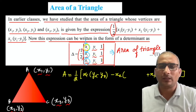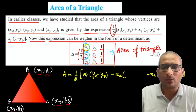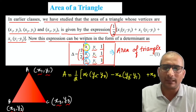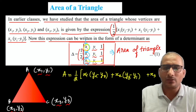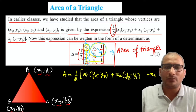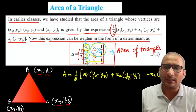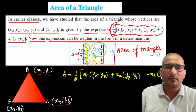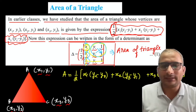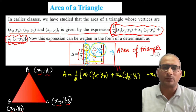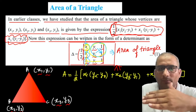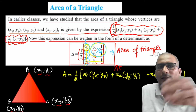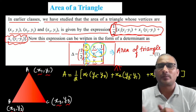Expanding x2's row and column gives y1 minus y3, but taking the minus sign it becomes y3 minus y1. Then expanding x3 gives y1 minus y2. So the full expansion gives x1(y2 - y3) + x2(y3 - y1) + x3(y1 - y2), which matches the formula from class 10. So that formula has been successfully reduced into determinant form, and expanding the determinant gives us back the same answer.